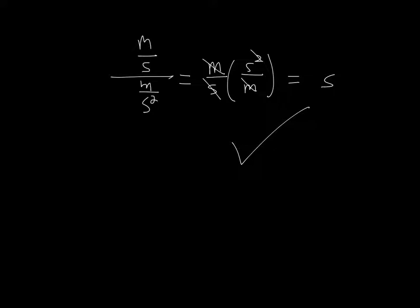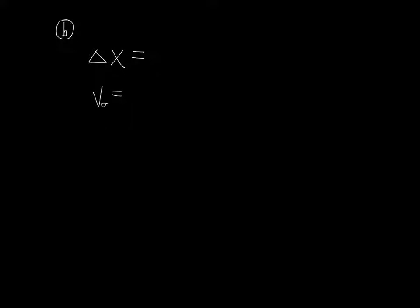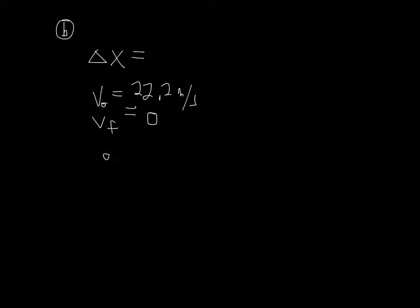For part two, the same train decelerates at a rate of 1.65 meters per second squared. We want to know how long it takes to come to a stop from its top speed. Setting up the chart: initial velocity is 22.2 meters per second (the top speed we just solved), final velocity is zero since it comes to a stop, acceleration is −1.65 m/s² (negative because decelerating), and delta t is what I'm looking for.